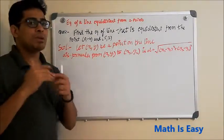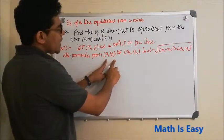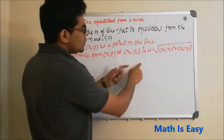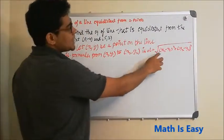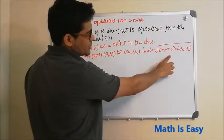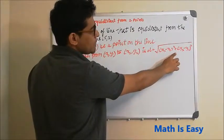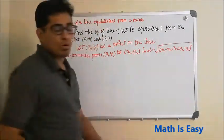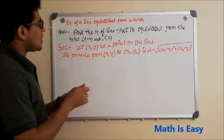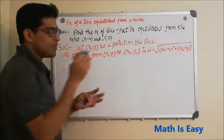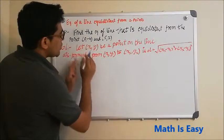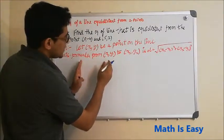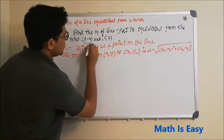We know the distance formula between two points. If the first point is (x₁, y₁) and the second is (x₂, y₂), the distance formula is the square root of (x₂ - x₁)² plus (y₂ - y₁)². Now we will equate the distance between (x, y) to this point and then (x, y) to that point.